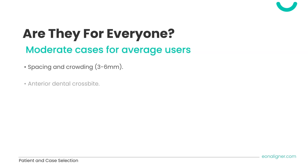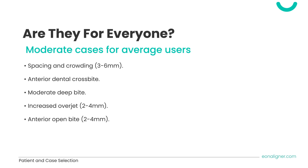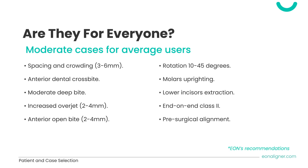Moderate cases for average users include spacing and crowding of 3 to 6 millimeters, anterior dental crossbite, moderate deep bite, increased overjet of 2 to 4 millimeters, anterior open bite of 2 to 4 millimeters, rotations around 10 to 45 degrees, molar uprighting, lower incisor extraction, end-on-end class II molar relationships, and pre-surgical alignment.